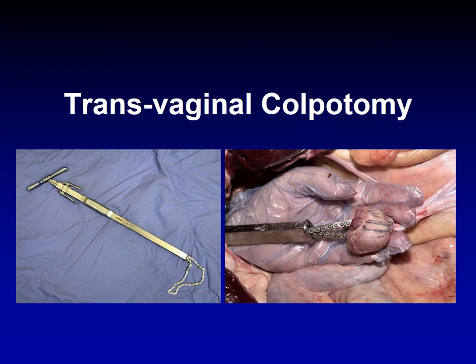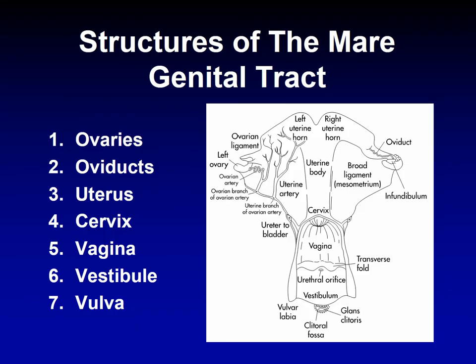We've now finished the clinical significances and the positioning of the reproductive organs in the pelvic cavity, and we've talked about the pelvic cavity and its borders. In the next talk, I will discuss each part of the female reproductive system: the ovaries, oviducts, uterus, cervix, vagina, vestibule, and vulva. With each one, I will mention some of the associated clinical cases. Thank you.